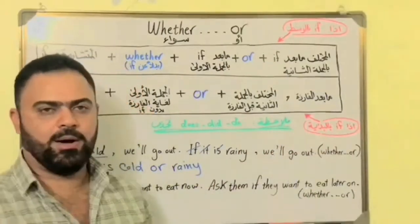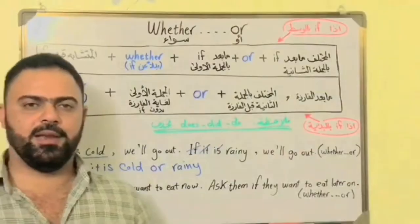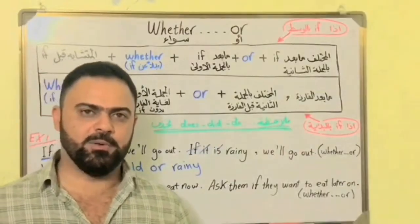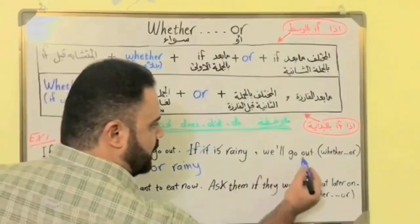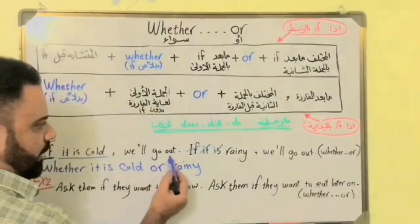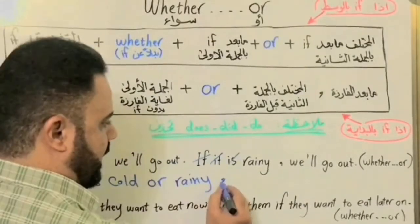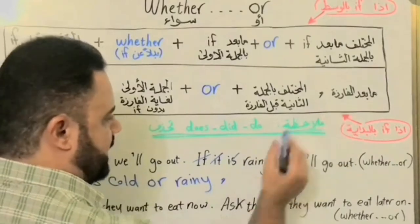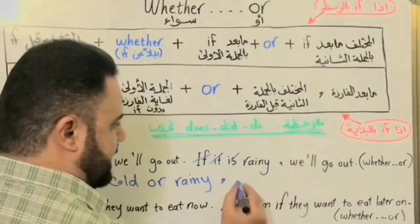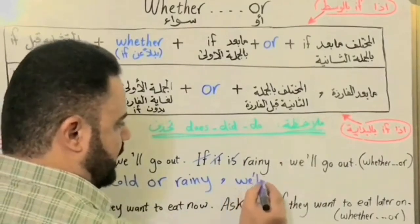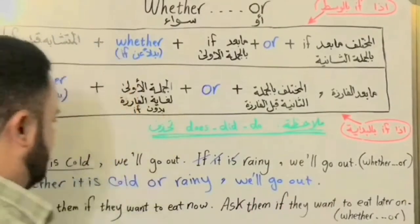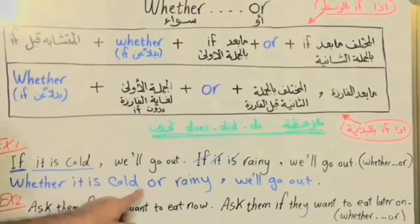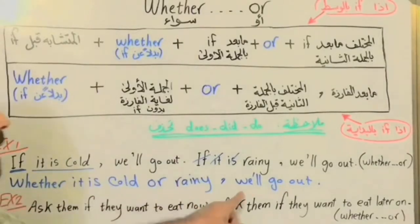The similar parts match each other — 'we will go out' appears in both sentences. So the similar part is 'we will go out.' After placing whether, we write the different part — 'it is cold' — then or — then the different part from sentence two: 'rainy.' Whether it is cold or rainy, we will go out.